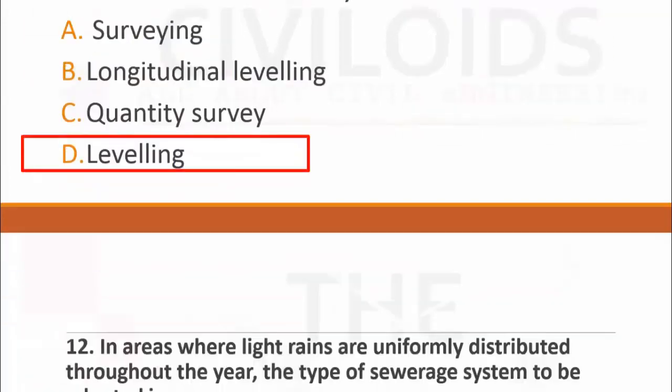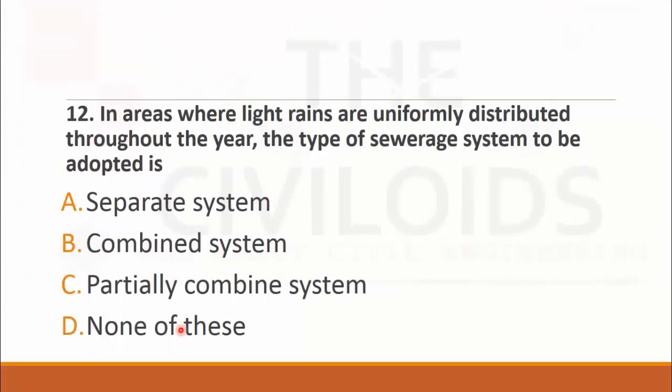MCQ number twelve: In areas where light rains are uniformly distributed throughout the year, the type of sewage system to be adopted is. The choices are: A. separated system, B. combined system, C. partially combined system, and D. none of these. The most suitable answer is B. combined system.